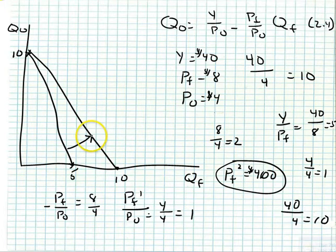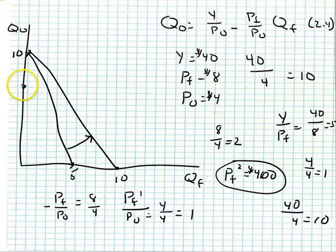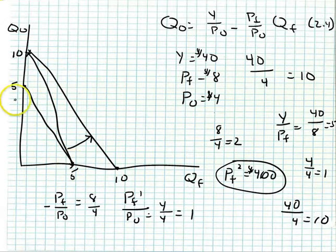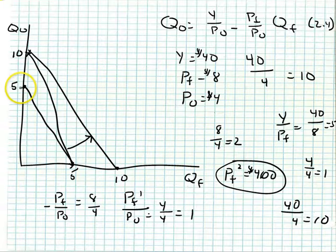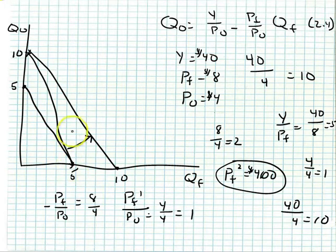Now what happens if we increase the price of other goods from $4 to $8? The y-intercept changes: $40 divided by $8 equals 5, so I have just decreased the consumption possibilities of the household. Increasing the price of other goods decreases the maximum quantity of other goods I could purchase if I spent all my money on them, while keeping the maximum quantity of food the same.